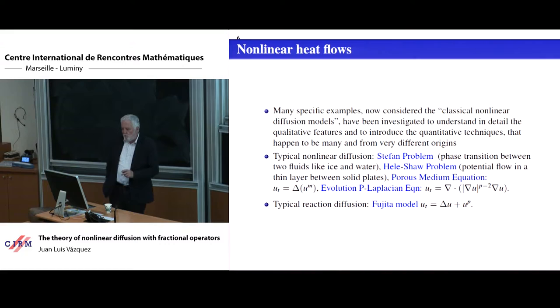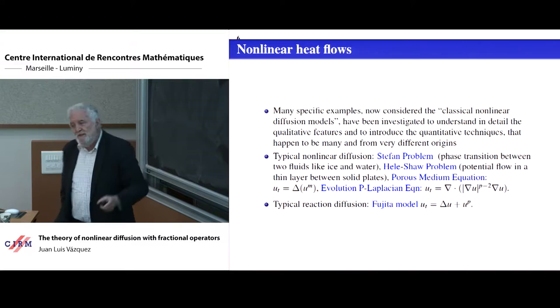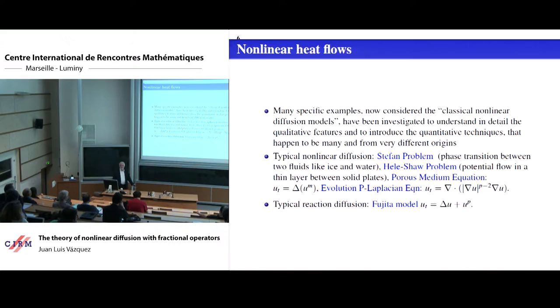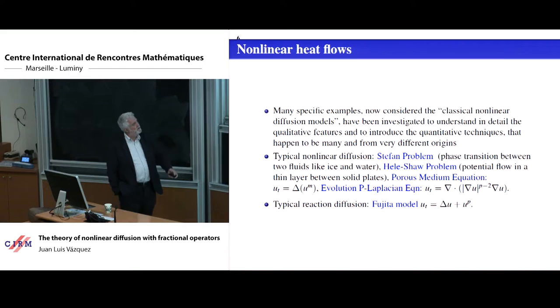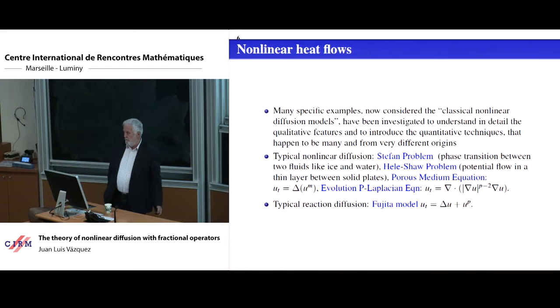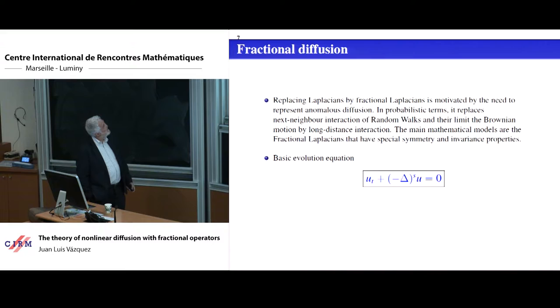If you go to typical reaction diffusion where you don't complicate the Laplacian but add lower order terms, this looks naïve — u to the p is lower order. But if p is larger than one, solutions blow up in finite time. This was a real discovery: the simplest mechanism to produce solutions that blow up in finite time and produce a nonlinear singularity not present in the data. Once this progress was done in this reaction diffusion — the Fujita equation — many other equations were attacked because singularities became tractable.